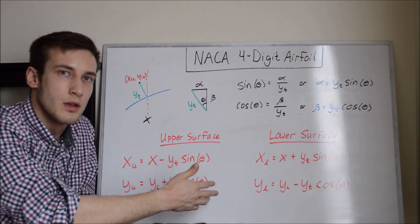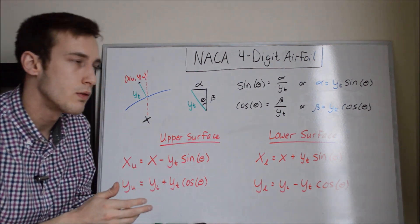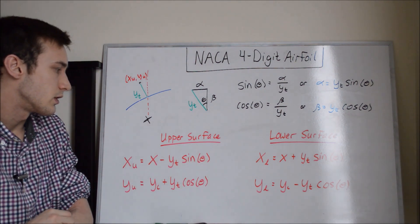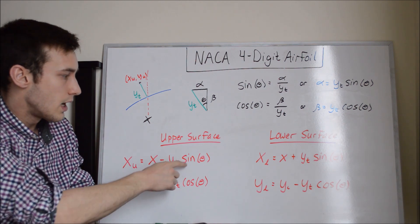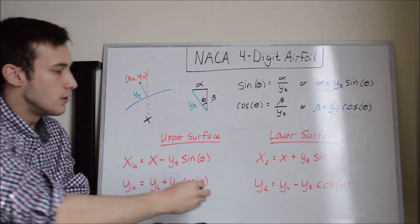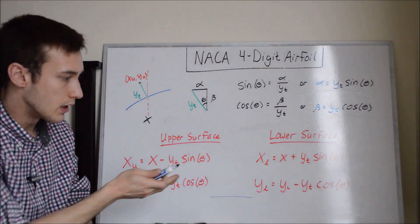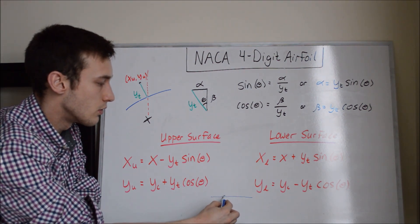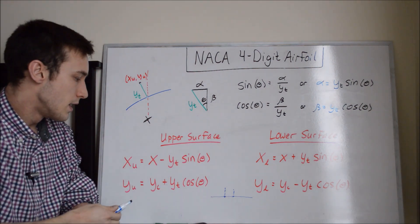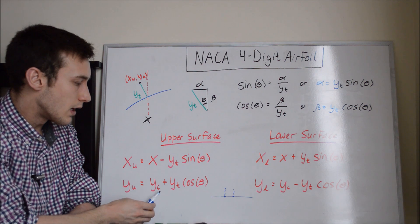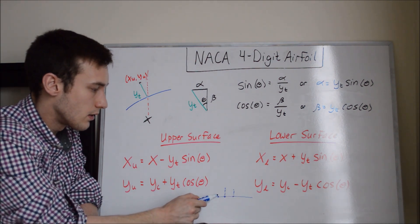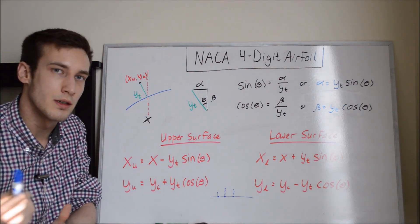For a symmetric airfoil, theta = 0 everywhere. Plugging this in: sin(0) = 0, so the X correction term vanishes and every upper/lower X point equals its actual chord X position — which makes sense since a horizontal camber line has no slope. Cosine(0) = 1, so Y_upper = Y_camber + Y_T = 0 + Y_T, meaning the thickness is simply added straight up and down. This confirms the equations are consistent for symmetric airfoils like the NACA 0012.